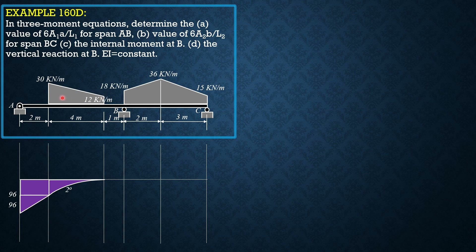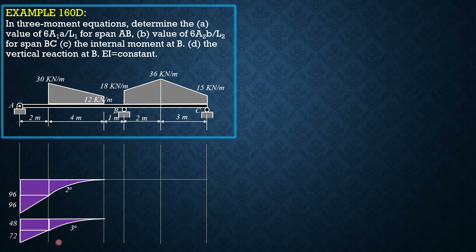For the triangular loading, the intensity is 30 minus 12, so 18. One half of 4 times 18 is 36; 36 times 4/3 is equal to 48 — that's the third-degree curve. Then one half of 4 times 18 is 36; 36 times 2 gives a moment of the equivalent downward load equal to 72, as shown. So that's the moment diagram by parts for this trapezoidal loading.